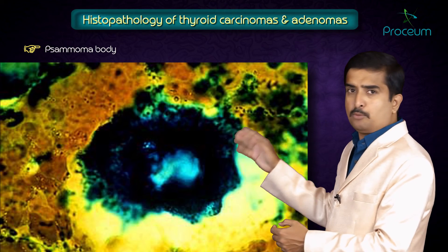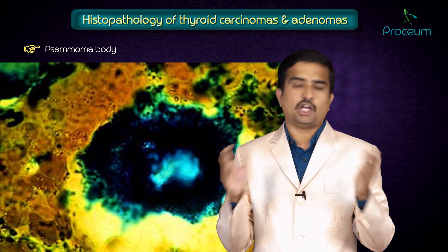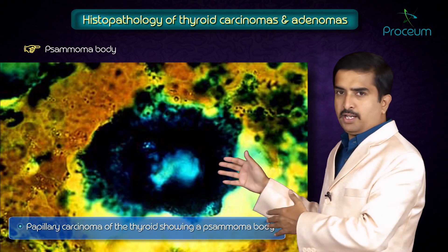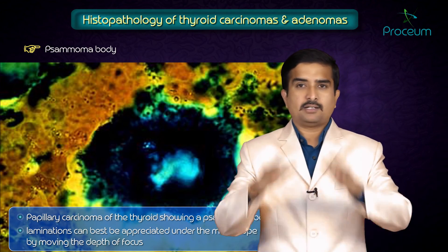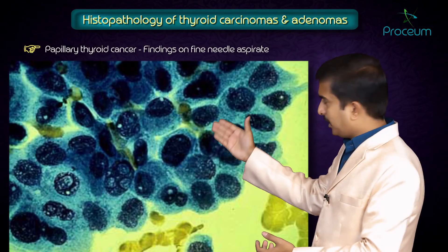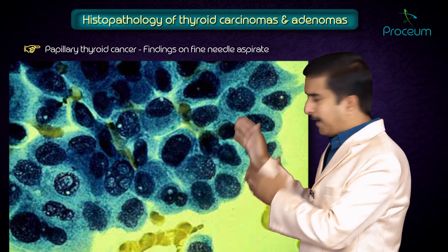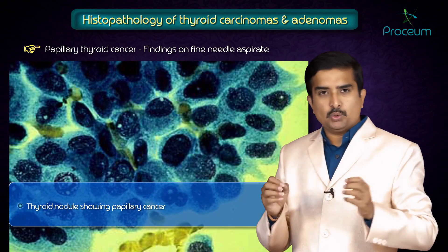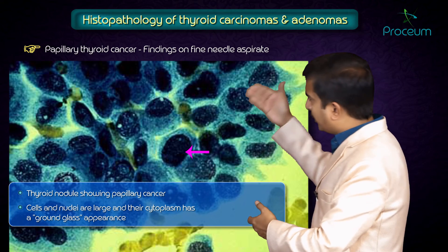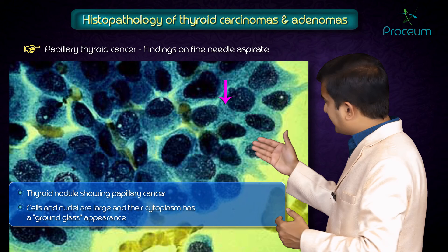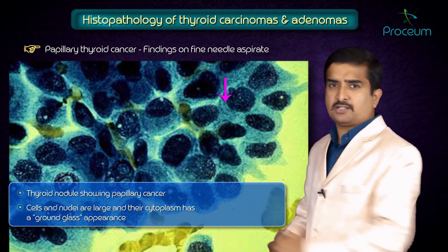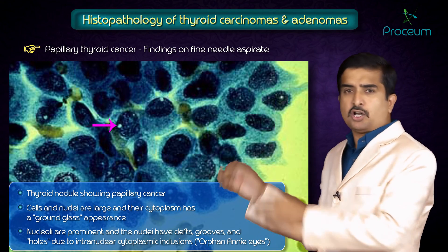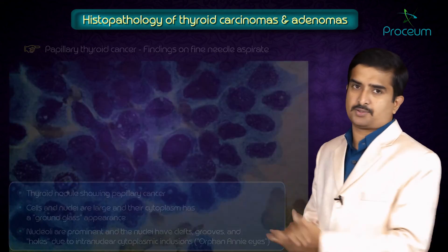Another important image is the psammoma body on fine needle aspirate of papillary carcinoma of the thyroid. The laminations can best be appreciated under the microscope by moving the depth of focus. In papillary thyroid cancer on fine needle aspirate, the cells and nuclei are large, and the cytoplasm shows a ground glass appearance. The nucleoli are prominent, and the nuclei have grooves and holes mainly due to intranuclear cytoplasmic inclusions called 'Orphan Annie eyes.'